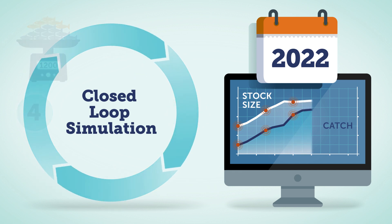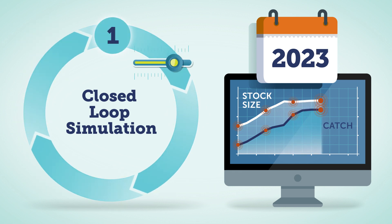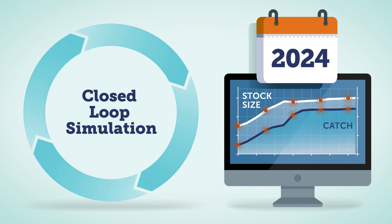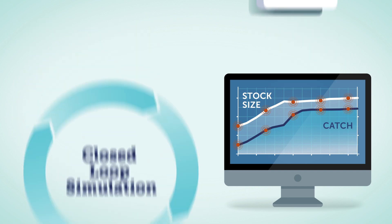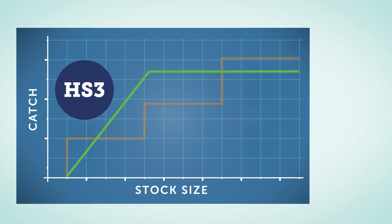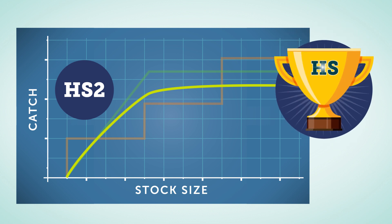Each loop represents one management cycle, be it one year, three years, or some other time period. This multi-cycle nature of MSE's closed-loop simulation thus determines the highest-performing candidate harvest strategy going forward over the long term.